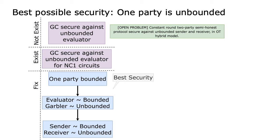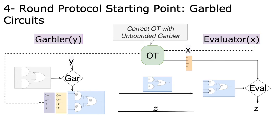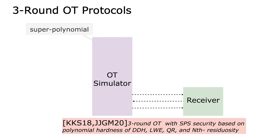Specifically, due to the garbled circuit limitation, we first fix the evaluator to be bounded and the garbler to be unbounded, which in turn means that the two-party protocol has an unbounded receiver and a bounded sender. Now, if we use the right OT protocol, we can already obtain the round-optimal two-party protocol that is secure against an unbounded garbler and bounded evaluator. Our four-round protocol requires a three-round oblivious transfer protocol which is statistically secure against a malicious OT receiver. Unfortunately, no OT protocol achieving malicious security with black box simulation is known to exist in three rounds. Therefore, we look at weaker forms of OT protocol that are achievable in three rounds.